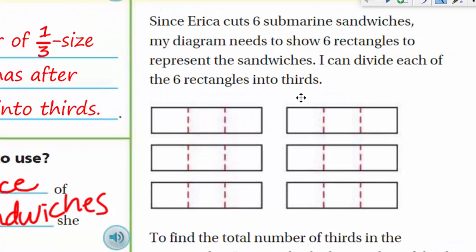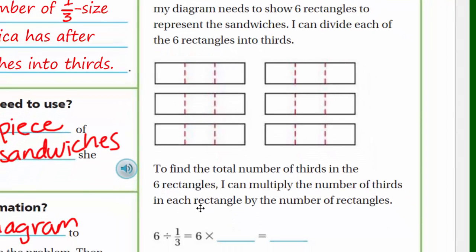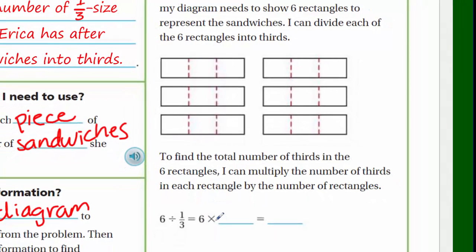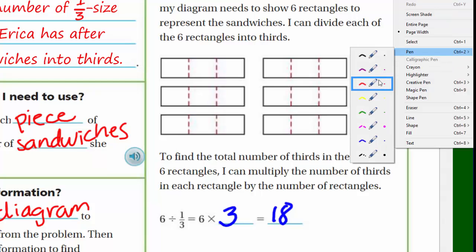Since Erica cuts six submarine sandwiches, my diagram needs to show six rectangles to represent the sandwiches. I can divide each of the six rectangles into thirds. To find the total number of thirds in six rectangles, I can multiply the number of thirds in each rectangle by the number of rectangles. So: six sandwiches divided by one-third is the same as six times three — which equals 18 pieces.